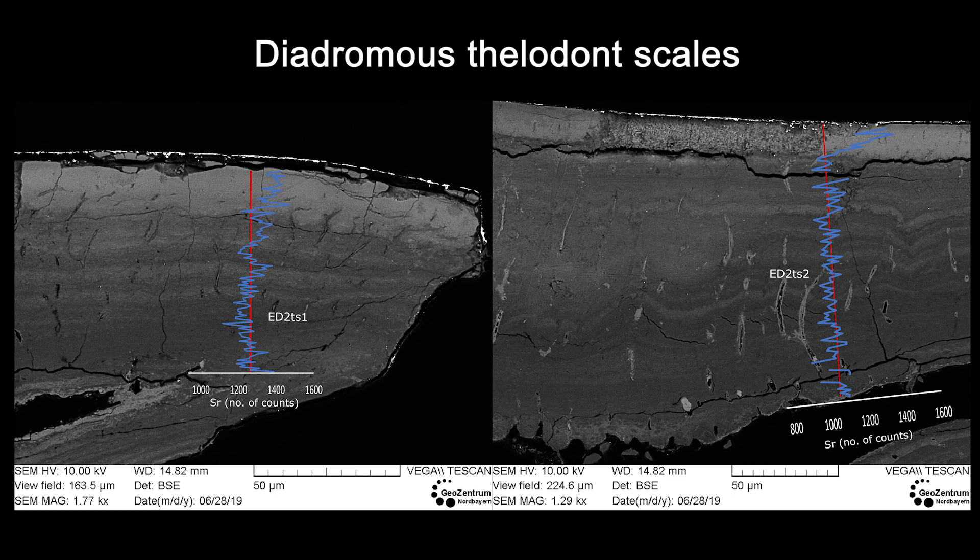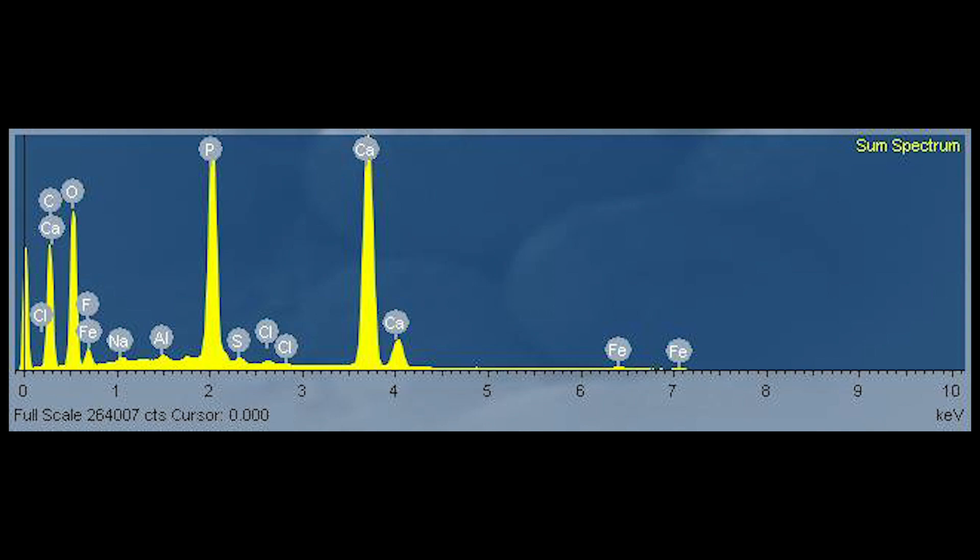However, if we take a closer look at the corresponding EDX energy spectra, we recognize that background noise is very high. Elements like sodium or chlorine barely rise above background level. The high level of background noise impairs the measurements of less pronounced element peaks like strontium.